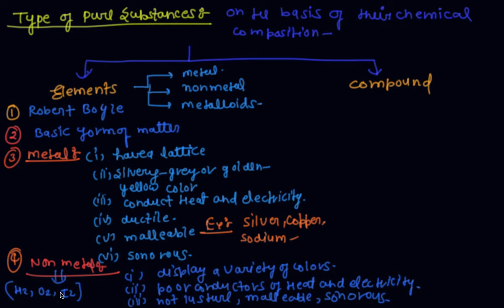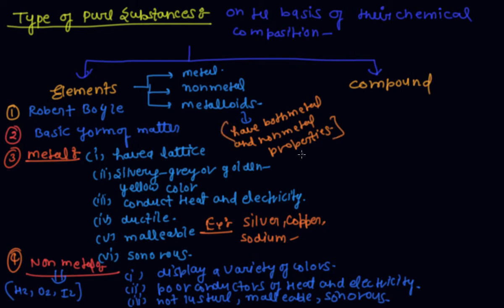Some elements called metalloids have both metal and non-metal properties. Examples of metalloids are germanium, silicon, and boron. These are also called semiconductors.